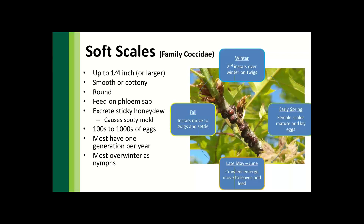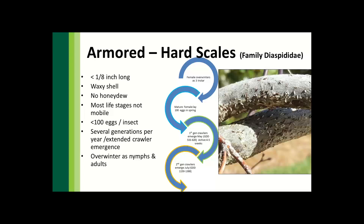Transitioning over to armored scales, they are certainly much smaller — typically smaller than an eighth of an inch long. You may be able to see the adults visually without a hand lens, but to see the crawlers or other life stages you'll probably need at minimum a hand lens or potentially a microscope. They typically have a waxy shell, do not produce honeydew — which is especially important as we're talking about systemic options — and most life stages are not mobile.